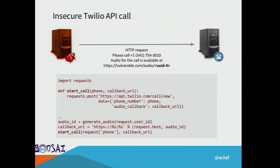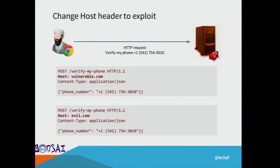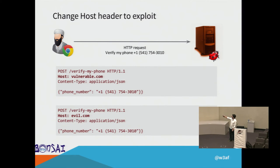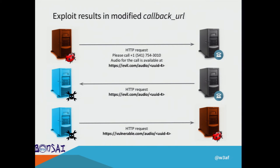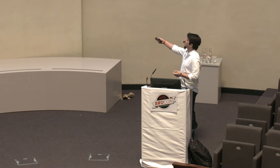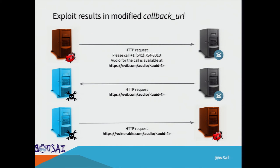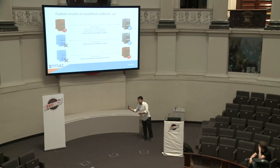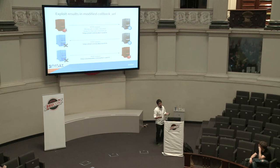Here's the vulnerability and how to exploit it: by changing the original HTTP request so the host becomes evil.com, instead of Twilio going to the vulnerable web application to get the audio, it goes to my application at evil.com. From evil.com I receive the unique ID, then I fetch the audio from the vulnerable web application, get the code, and send it back to Twilio — which has no idea what happened.